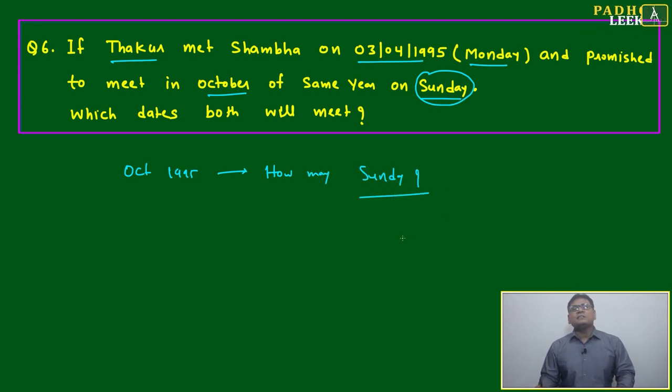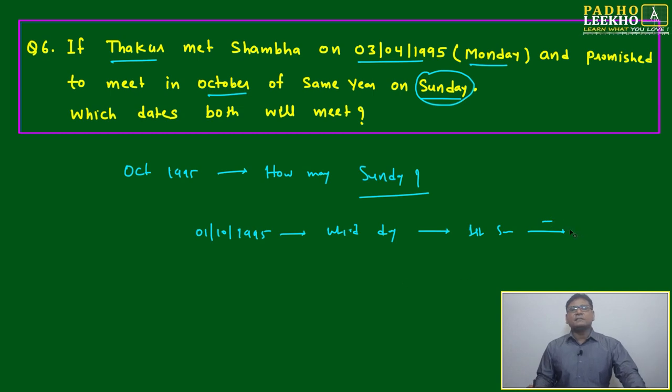Question is how to find how many Sundays. First, we have to just calculate first October - first October which day. Afterwards, based on that, we will calculate which day will be first Sunday in October. And afterwards, just repetition of seven - just repetition of seven.